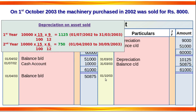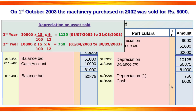The depreciation amounts for years one, two, and three are posted to the machinery account. The accumulated depreciation is Rs. 750. The sale price of Rs. 8,000 is credited to the machinery account and debited to cash account. A profit or loss on sale of the asset is then calculated.